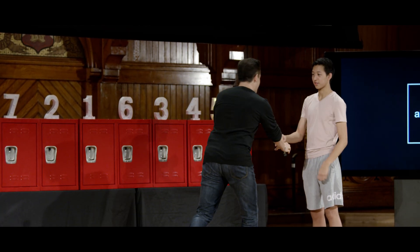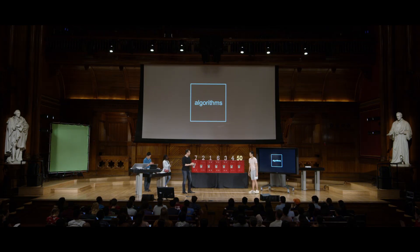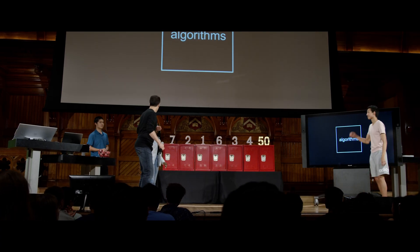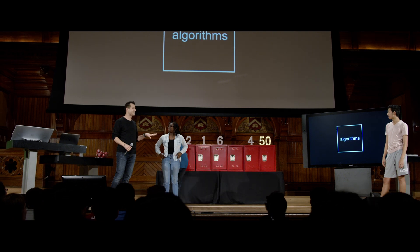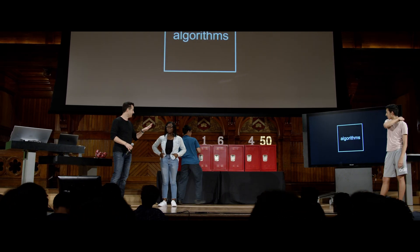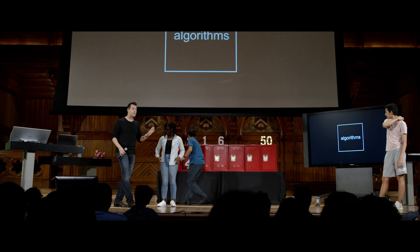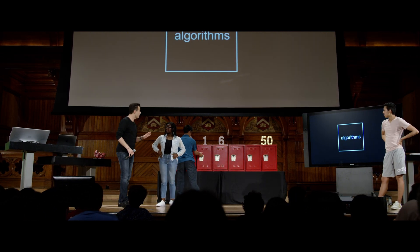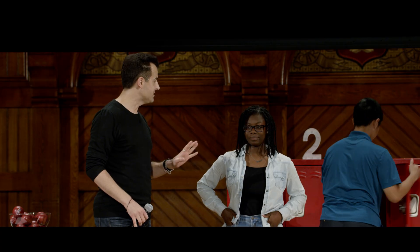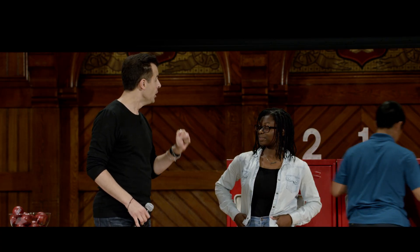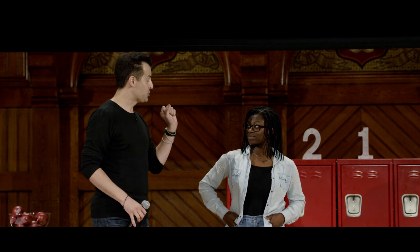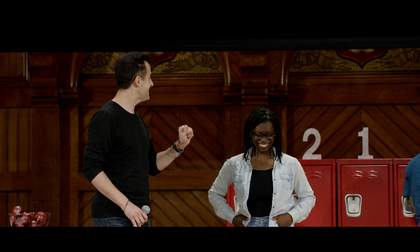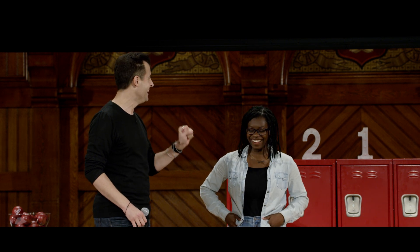DAVID MALAN: Thank you, Eric. Stay on stage with us for a moment, and a round of applause for finding 50 so well. Nazari, could you come on up? We need you not to look at the numbers, because Brian needs to do a little bit of magic — he's going to put some of the numbers back into the locker, so everyone in the room will know what's going on except you. We're going to give you the added bonus of sorting the numbers in advance. Brian is in the process of sorting some numbers — I'm just stalling right now.